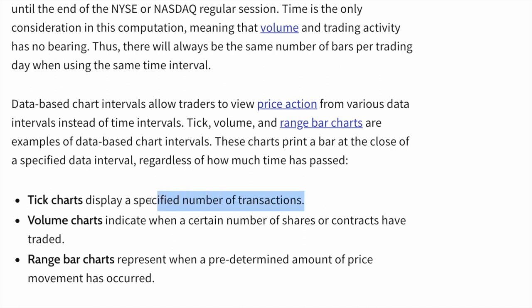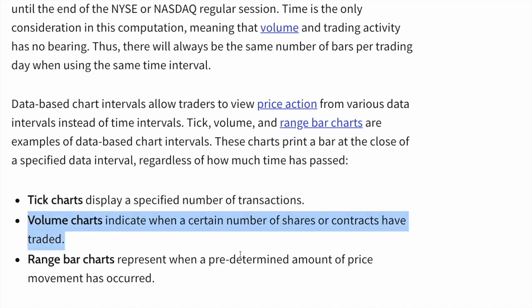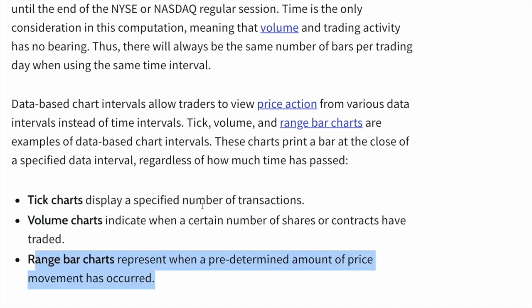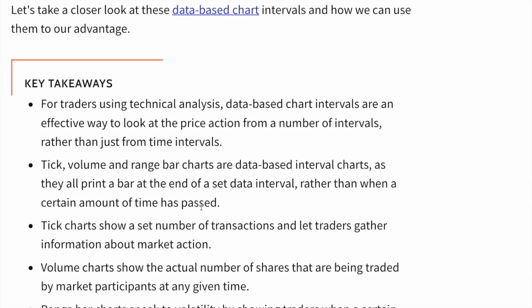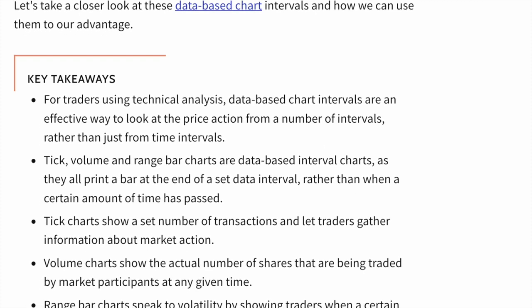A tick chart displays a certain number of transactions. You also have volume charts and range bar charts. The ones you see in TradingView are time-based — so you have a bar form once a minute passes, showing the activity in that minute, rather than a bar forming once a certain number of transactions have occurred.